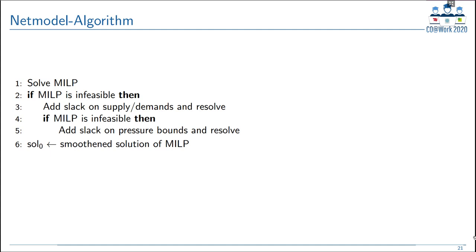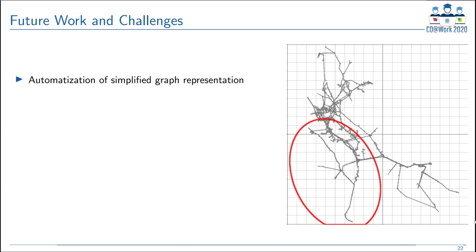To conclude, here is an outlook on our current and future work. First, we are working on automating the process of deriving simplified graph representations. Currently these are done manually by our project partner OGE, but we want to automatically derive simple states, flow directions, and auxiliary links from the operation modes and actual topology of the network station subgraphs. Second, we are working on deriving a solution that is feasible for the non-linear version of the momentum equations using sequential linear programming — join the Q&A if you're interested.